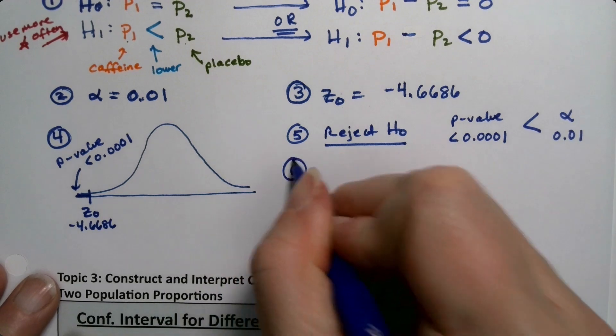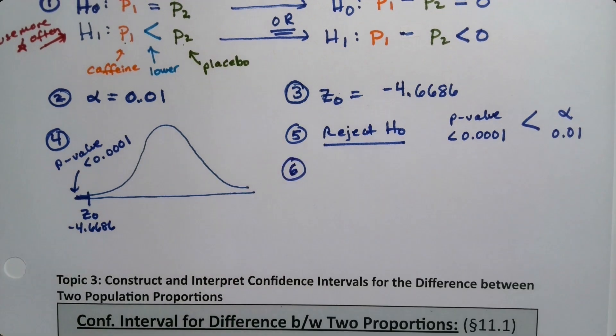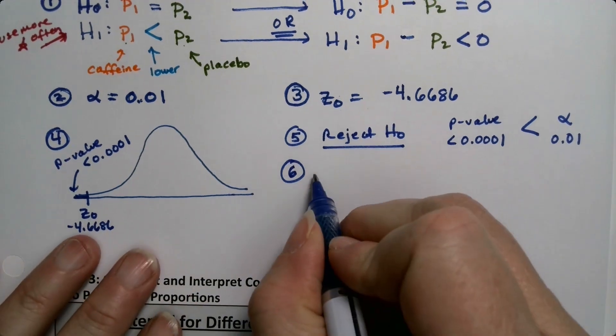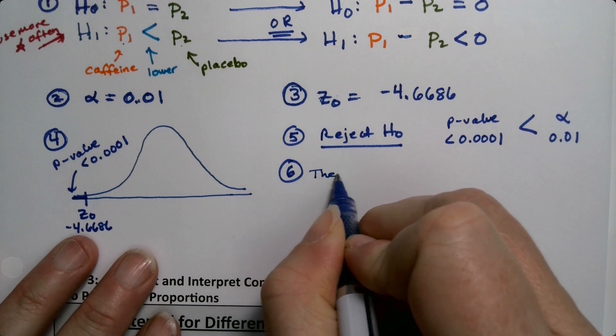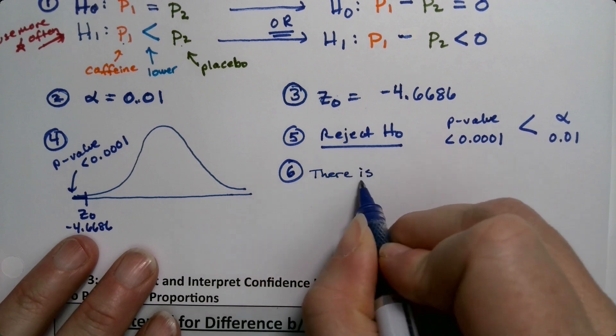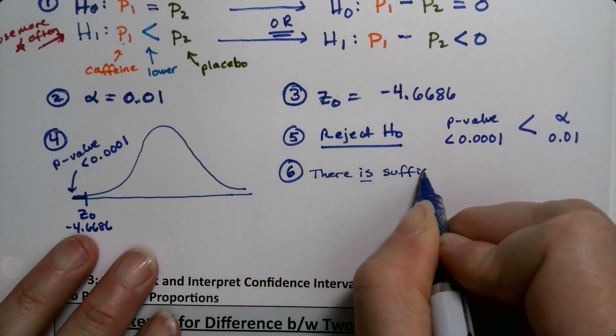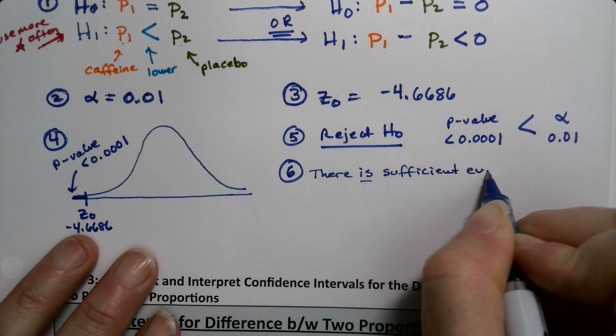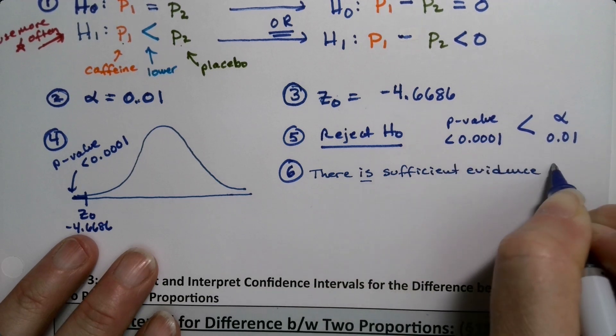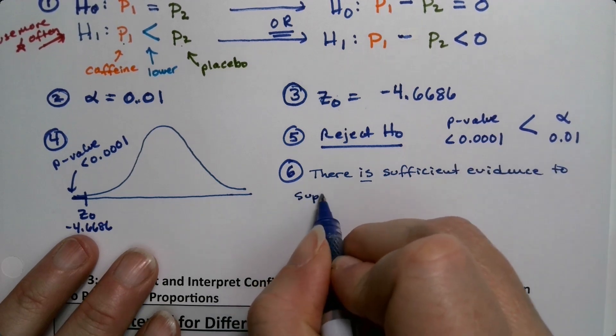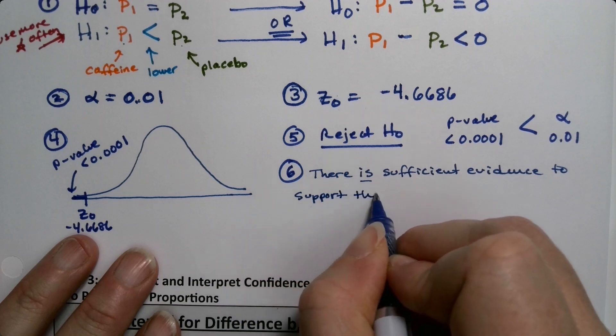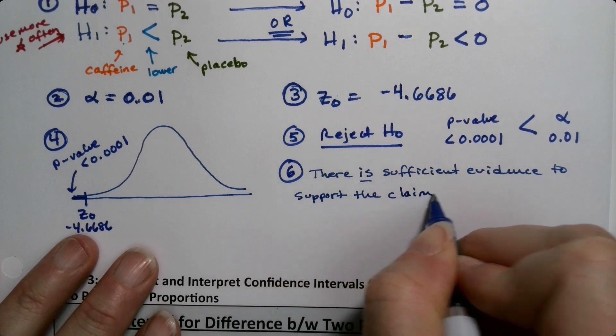Now we're on to step six, writing the conclusion. And the thing to remember is that a lot of times the conclusion is partially written for you somewhere in the problem. So you start off with the script - we're rejecting H0 so there is sufficient evidence to support the claim.